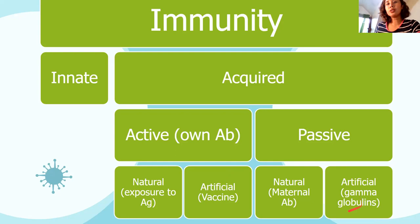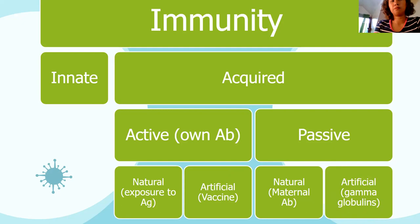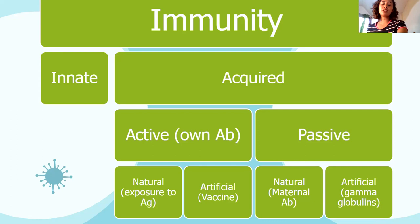Vaccination is active but artificial — the host produces the antibodies. Passive artificial immunity involves giving pre-made antibodies — gamma globulins. These are antibodies already made, like in rabies treatment. If passive, you receive pre-made antibodies; if active, you need to create your own. B cells make the antibodies in active immunity; in passive immunity, someone else's plasma cells made them. The response from pre-made antibodies is shorter than from vaccination.